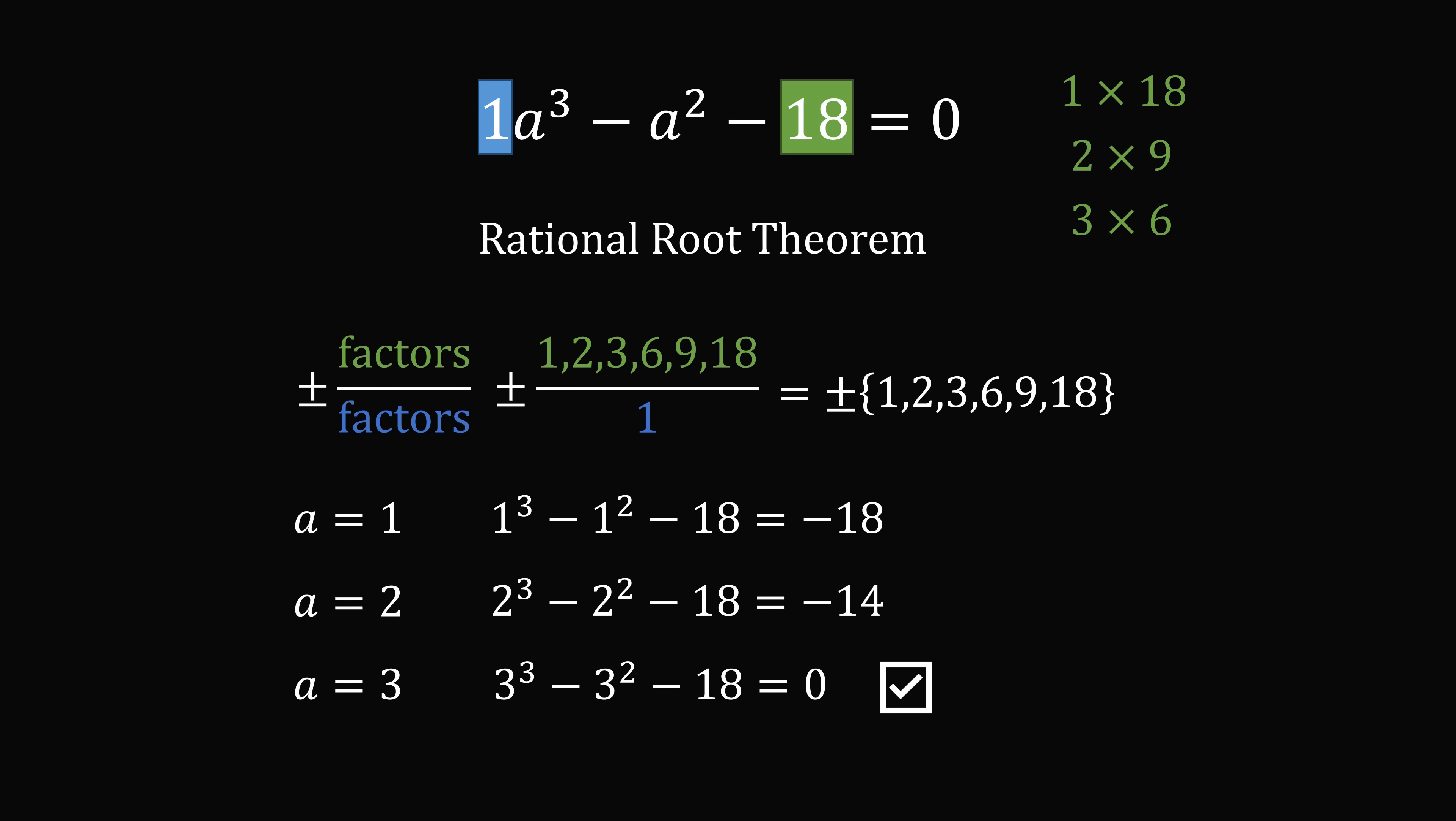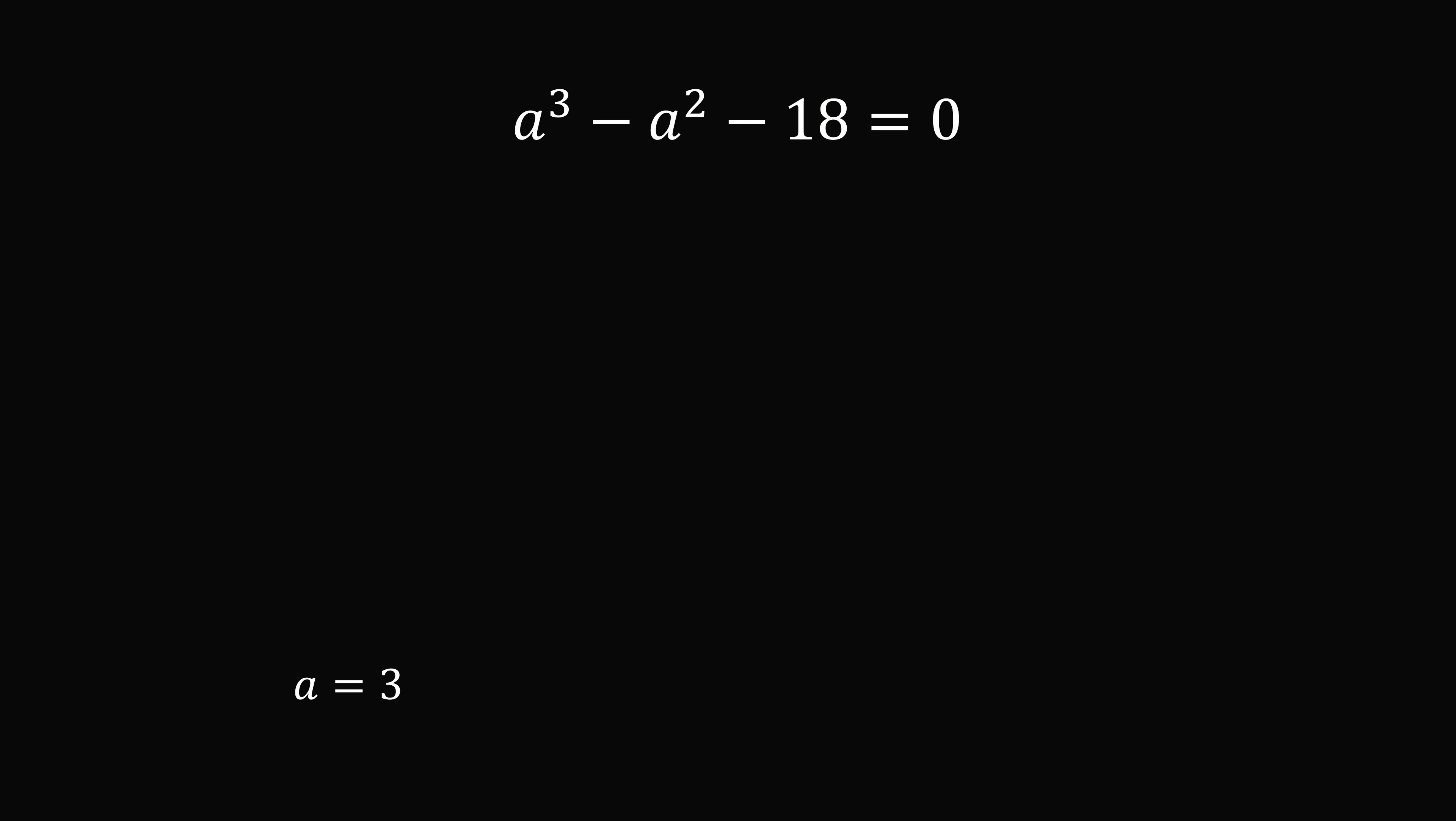Now we can simplify matters tremendously. Since a is equal to 3 is a root of the equation, a minus 3 will be a factor of the polynomial. So we will use polynomial long division. We take a cubed minus a squared minus 18 and we divide it by a minus 3. Now when you do polynomial long division, you want to have all of the placeholders set. We don't have any coefficient for the linear factor, so let's just insert that. We want 0 times a. So now we're all set.